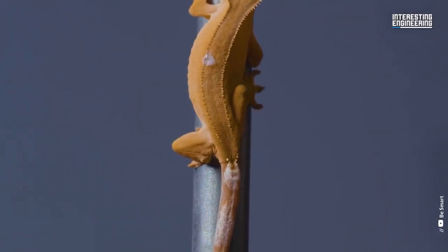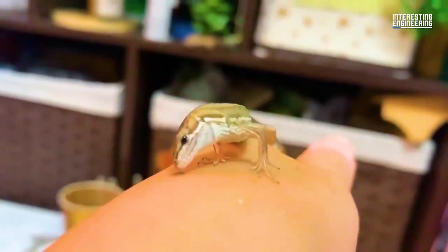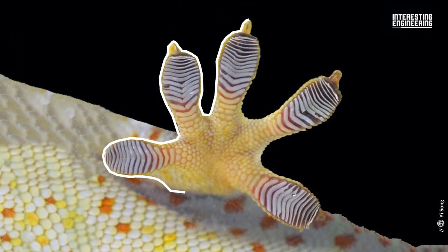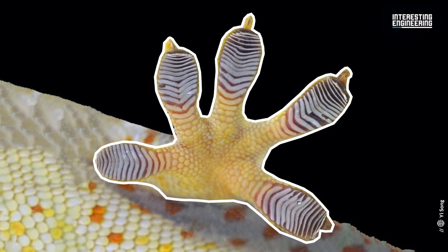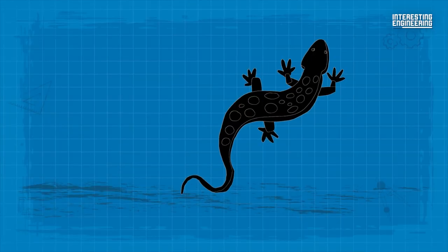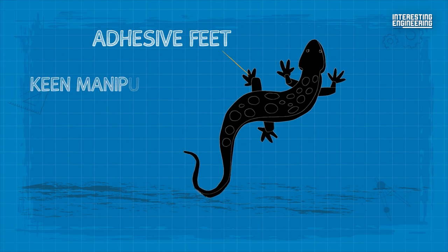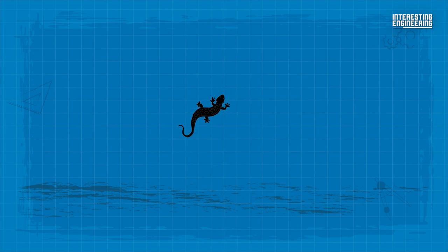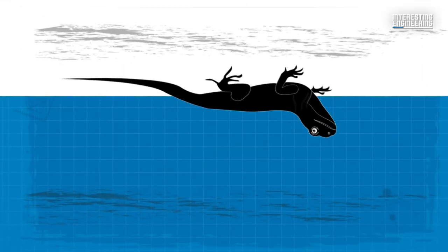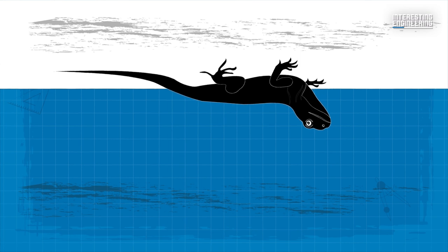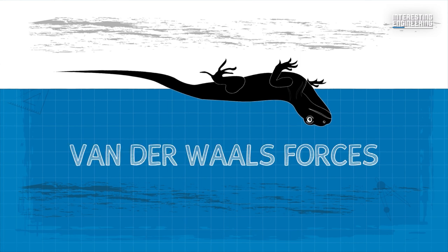Another reptile, the mighty lizard, has a host of tricks, but we will only look at one in this video. Their super sticky feet have always had humans wondering how they work. Now we know. With their adhesive feet and a keen manipulation of molecular bonds, geckos can climb vertical walls with ease and can even hang upside down from surfaces. They do this by exploiting van der Waals forces.